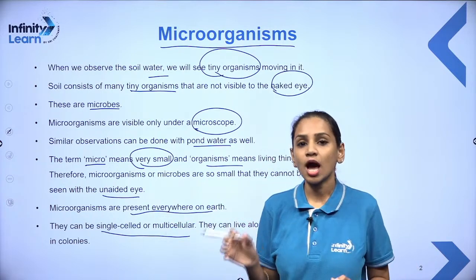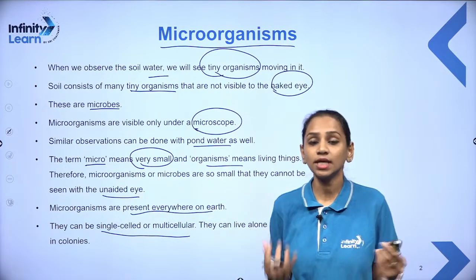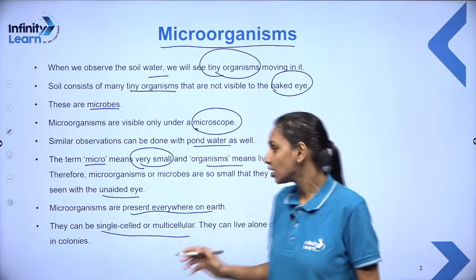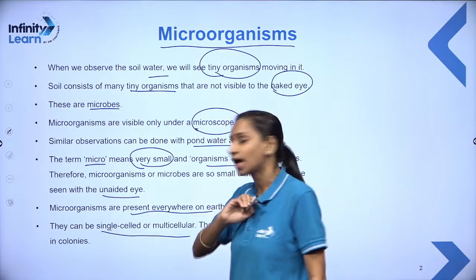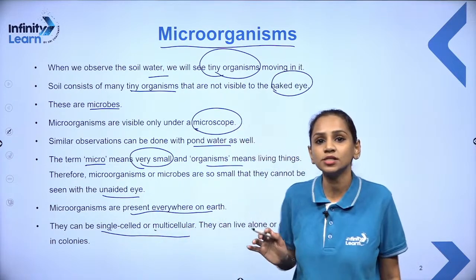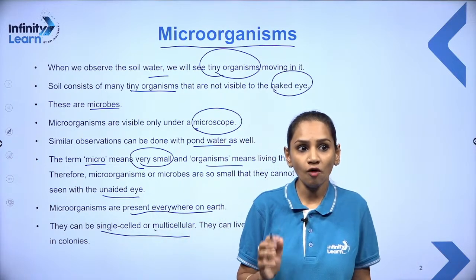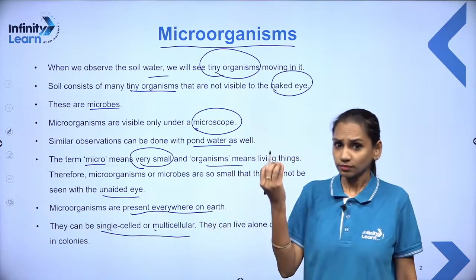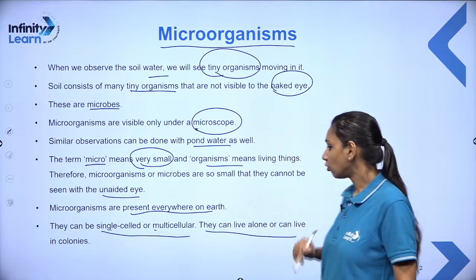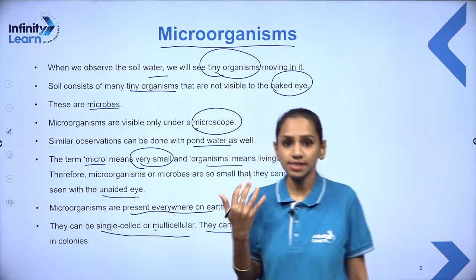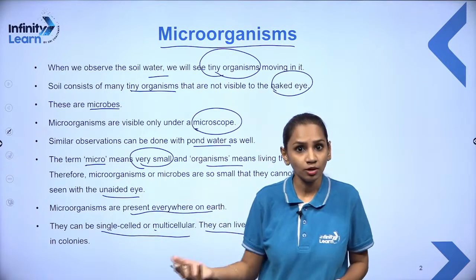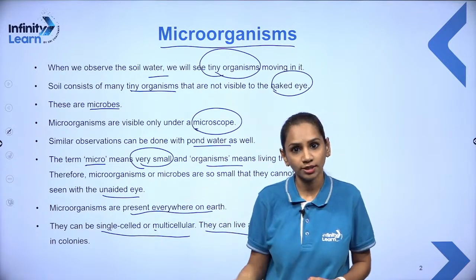Single-celled organisms are those made up of a single cell, meaning that single cell does all the biological functions. Microorganisms can be single-celled, or they can be multicellular — for example, fungi and algae are multicellular. They can also live alone or in colonies.